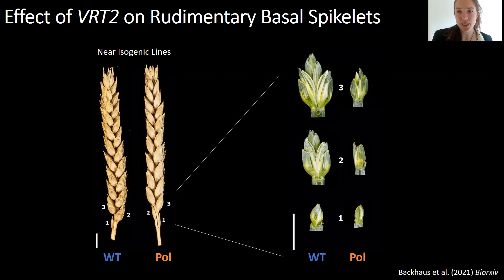However, the apical spikelets are not affected in polonicum, so we really wanted to understand what's special about these rudimentary basal spikelets.